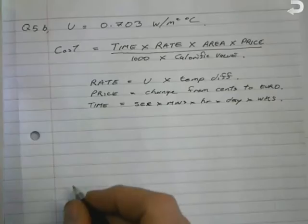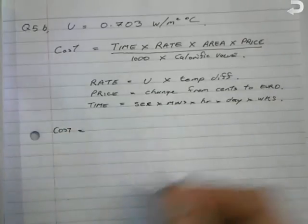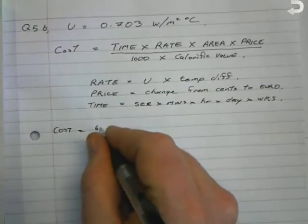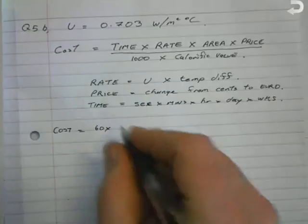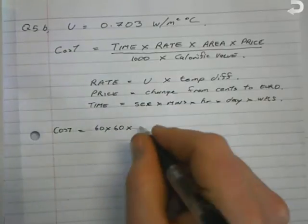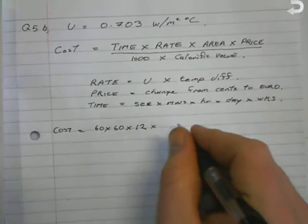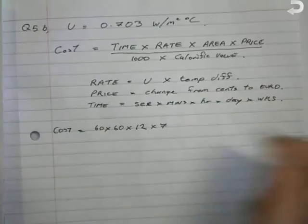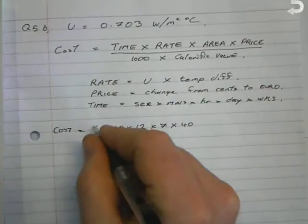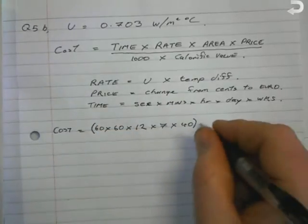The next step is we start inputting our information. Cost equals - the time in this question would be 60 seconds multiplied by 60 minutes multiplied by 12 hours because it says in the question 12 hours, multiplied by 7 days, multiplied by 40 weeks. So it says the heating period is 40 weeks. Now put all this information in brackets.